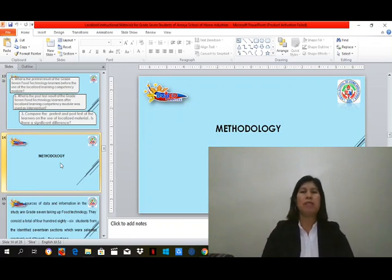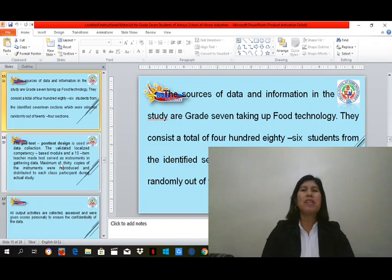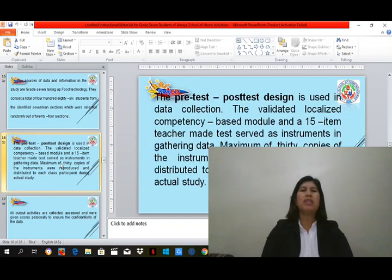For the methodology, the sources of data and information in the study are grade 7 students taking up food technology. They consist of a total of 486 students from the identified 17 sections, which were selected randomly out of 24 sections. The pre-test post-test design is used in data collection. The validated localized competency-based module and the 15-item teacher-made test served as instruments in gathering data. A maximum of 30 copies of the instruments were reproduced and distributed to each class participant during actual study.